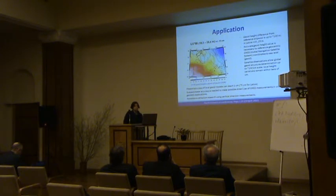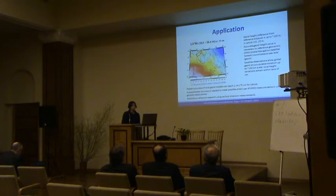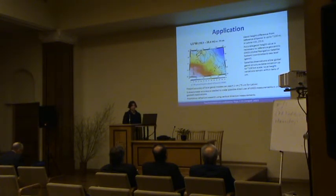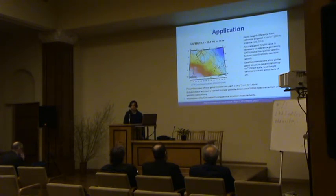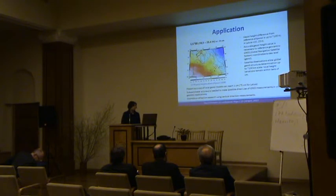Why do we need to know Geoid height? It is necessary to reference geocentric GNSS coordinates to sea level. Satellite observations allow global Geoid structure determination up to 100 km scale, while local height variations remain within 10 cm. Nowadays, accuracy of local Geoid models can reach 1 cm. Geoid height for the territory of Latvia has an accuracy of 5 cm. Sub-centimeter accuracy is needed to enable direct use of GNSS measurements in critical geodetic applications, for example in building construction. The new zenith camera can also be used for anomalous refraction research purposes.